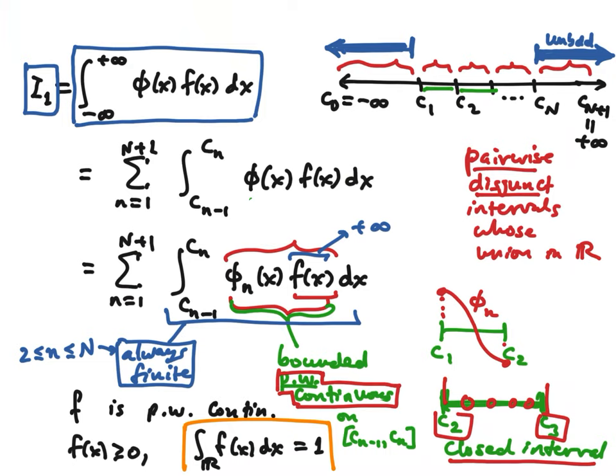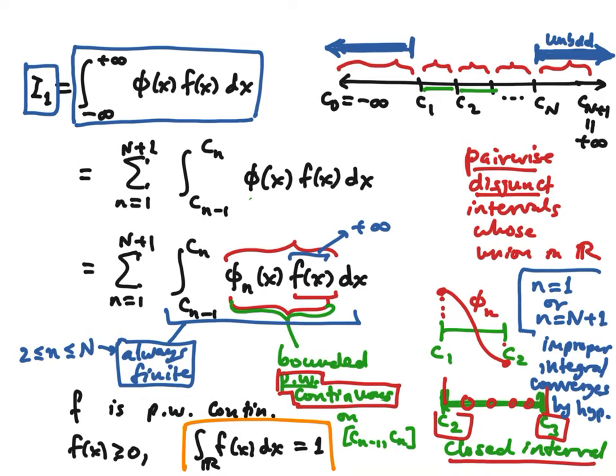When little n is one — the left-hand end — or when little n is big N plus one — the right-hand end — the improper integral converges by hypothesis, by assumption. In all other cases it was clear they converge, because it's just an ordinary closed interval with a piecewise continuous function. There was no question of convergence.